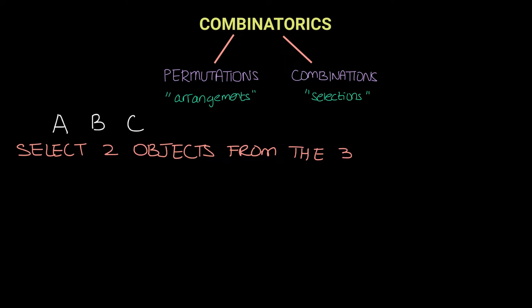So let's say one of our selections is AB. Another selection is AC, and we choose another selection BC.